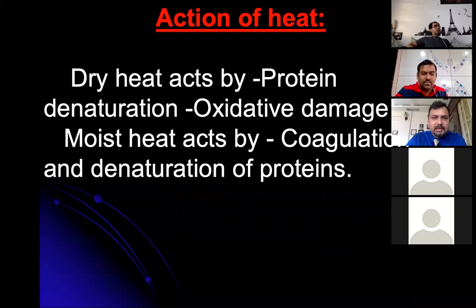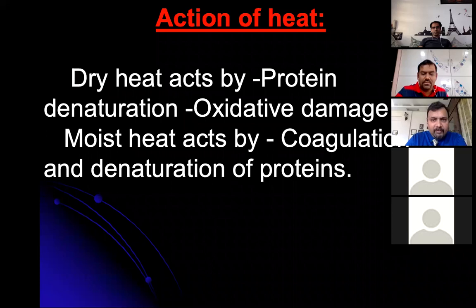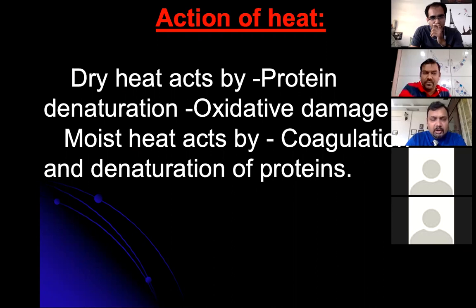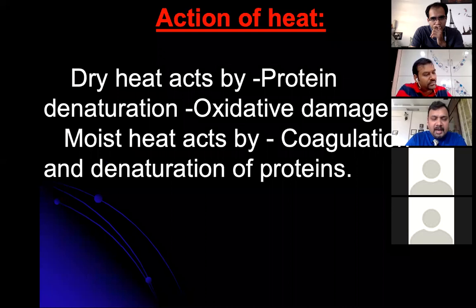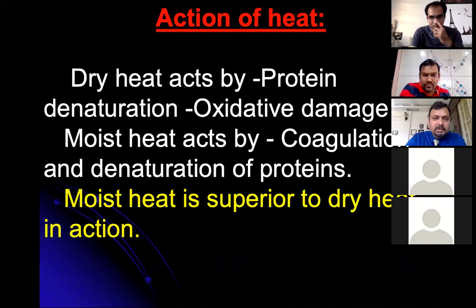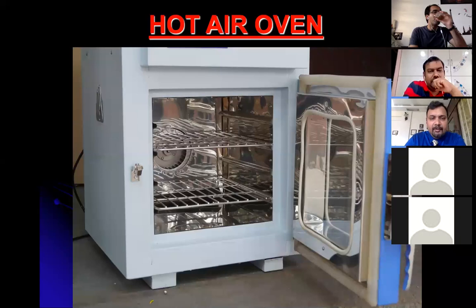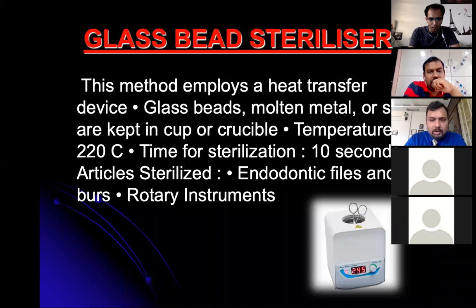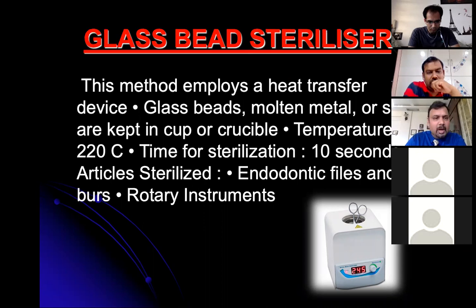Heat denatures proteins in the cell wall of microbes, breaking down the wall so DNA leaks out, killing the microbes. Moist heat coagulates proteins and does not allow further microbial growth, making it superior to dry heat. For dry heat, hot air ovens are used but less common now. The glass bead sterilizer operates at 220°C and sterilizes endodontic files, burs, and rotary instruments within 10 to 15 seconds.